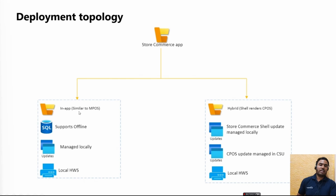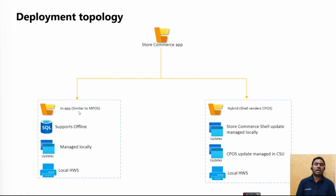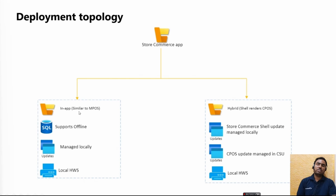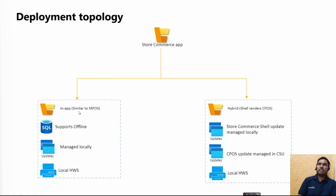For customers who want the Cloud POS experience with centralized managed updates, you deploy hybrid mode using the same Store Commerce App. In hybrid mode, the app acts as a shell and renders from Cloud POS via CSU. Whenever you update, you update just like Cloud POS from CSU. In hybrid mode the deployment is done through a centralized location via CSU. We will share the parameters for both in-app offline mode and hybrid mode in the description. You can also mix and match — for example, if a store has four POS terminals, you can use two as in-app and two as hybrid.